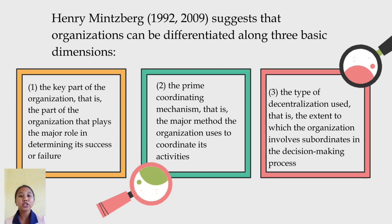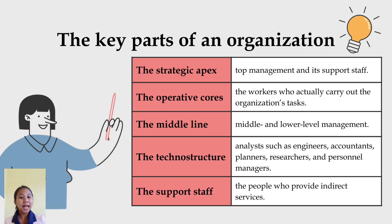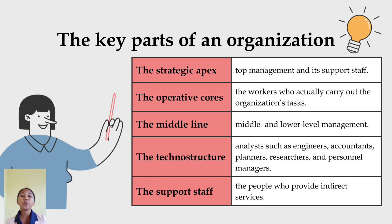The first basic dimension is the key part of the organization. It has five key parts. The first is the strategic apex — the top management and its support staff, such as superintendent and administrative cabinet. The second is the operative core — the workers who actually carry out the organization's tasks, such as teachers who operate the core in a school district. The third is the middle line — middle and lower level management; in a school district, principals are the middle level managers.